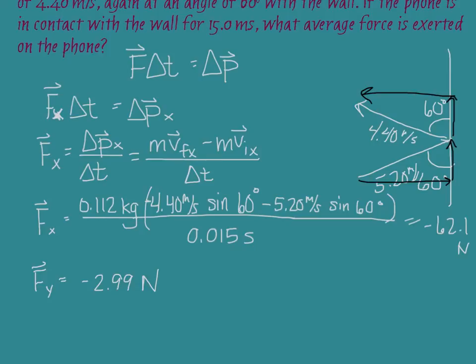Now I have x and y components for my force. To find the overall force, I combine these components as we learned to do with vectors. The x-component is 62.1 Newtons to the left — rather long — and the y-component is 2.99 Newtons downward — rather short. We use the Pythagorean theorem to find the magnitude of the force and trig functions to find the angle. The overall force is 62.2 Newtons at an angle of 87.2 degrees south of west, or below the negative x-axis.